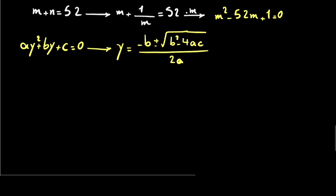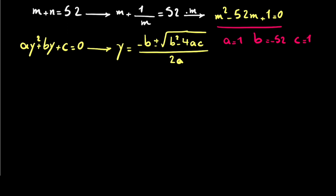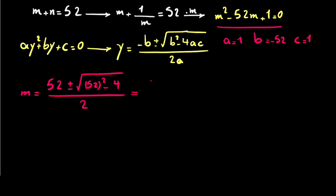In this quadratic equation, a equals 1, b equals negative 52, and c equals 1. So m equals negative b, which is 52, plus or minus the square root of b squared, which is 52 squared, minus 4 times a times c, which is 4, all divided by 2. That gives us m equals 52 plus or minus the square root of 2700, divided by 2.